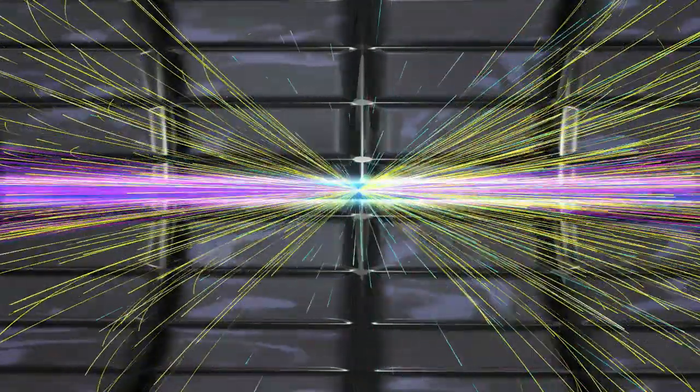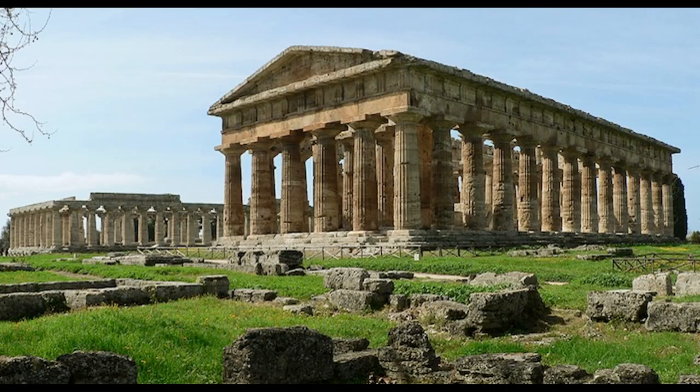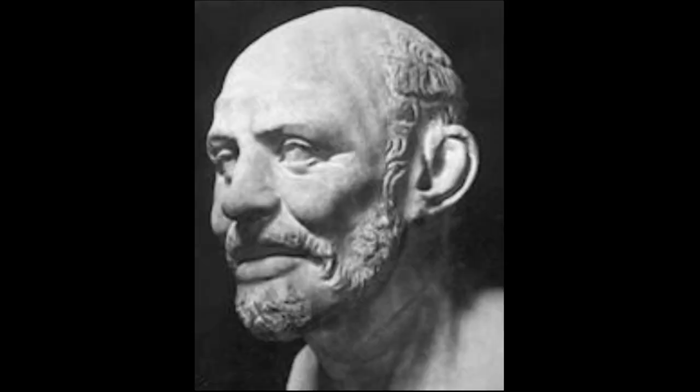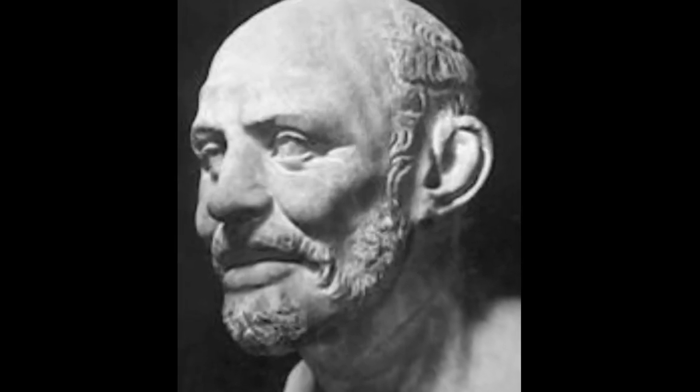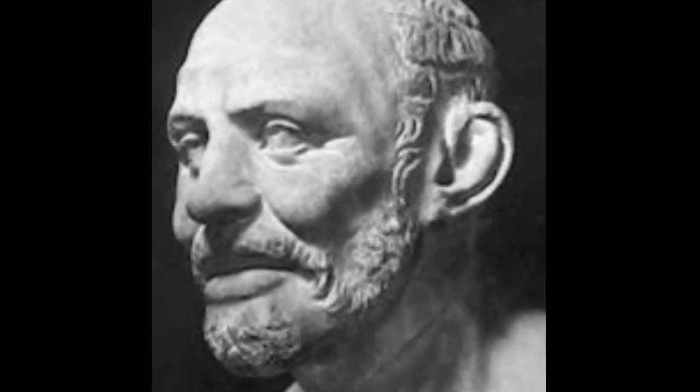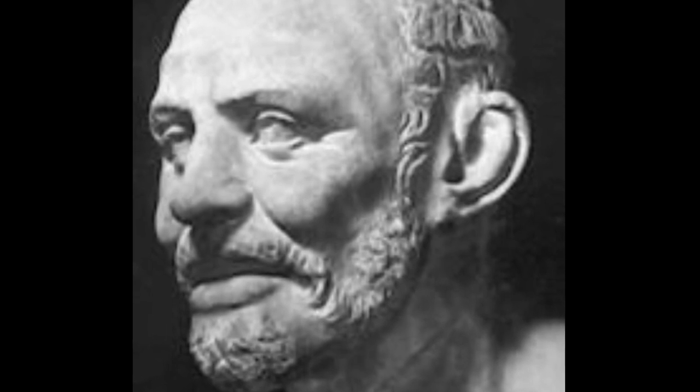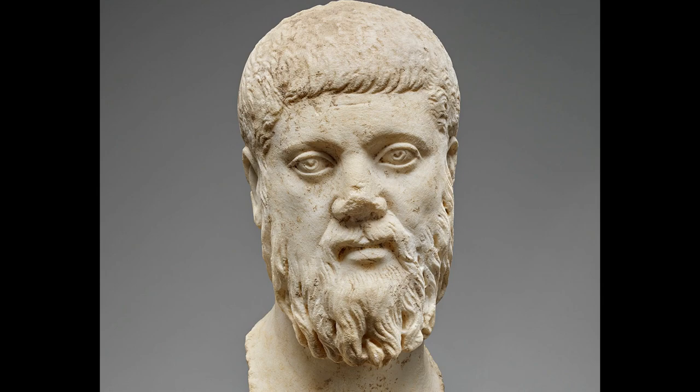But to get there, we have to start way back, all the way to ancient Greece. In about 400 BC, the Greek philosopher Democritus first came up with the idea of an atom. He believed that all matter was made of tiny particles called atoms. They had shapes first described by Plato, and so the shapes are called platonic solids.